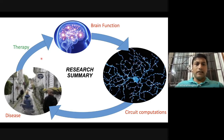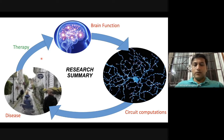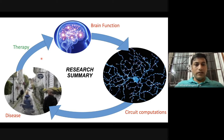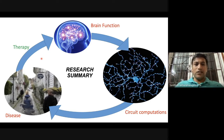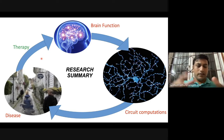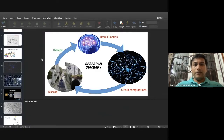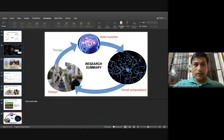To summarize, I'm interested in understanding brain function by looking at circuit computations in the retina. By understanding how things work normally, we can understand what happens to these circuits in disease, explain the pathology of vision-compromising disorders, and design therapies to restore circuit activity and hopefully alleviate the symptoms. Thank you all for listening, and thank you to the research club for the opportunity.